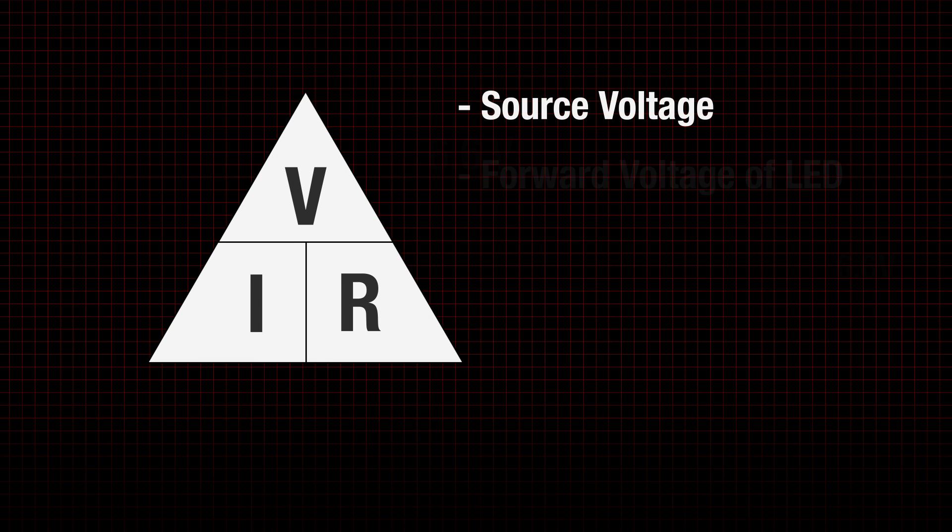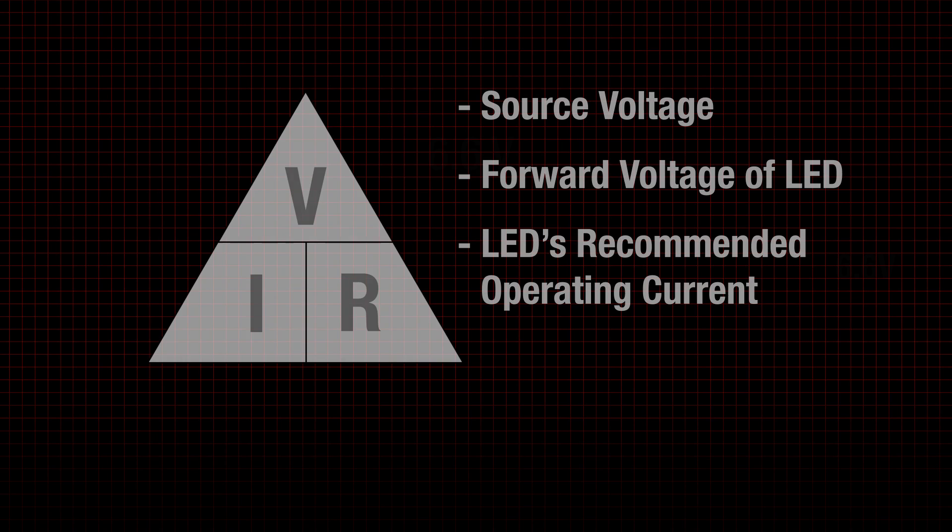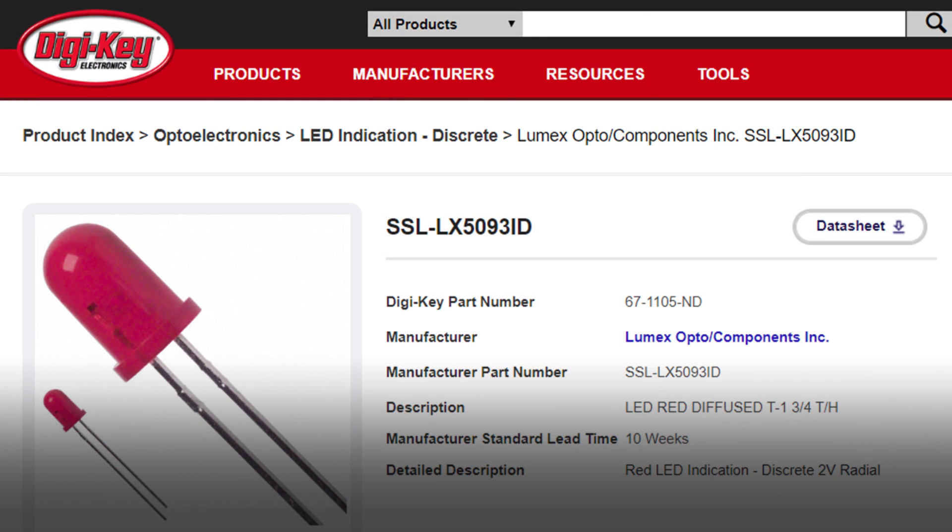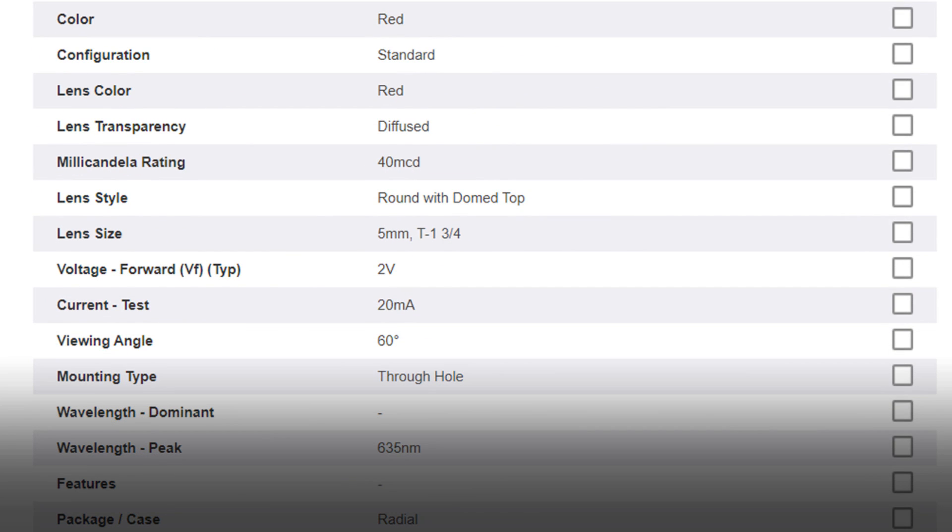For this application, we'll need to know the source voltage, the forward voltage of the LED, and the LED's recommended operating current. Looking at the specs on this example LED, we can see the forward voltage is 2 volts and the current is 20 milliamps. Let's say we have a supply voltage of 5 volts.